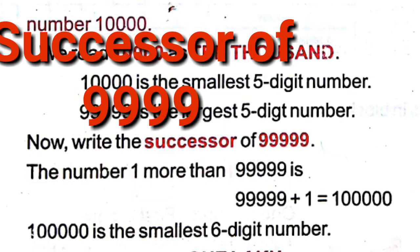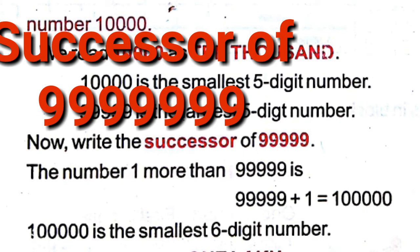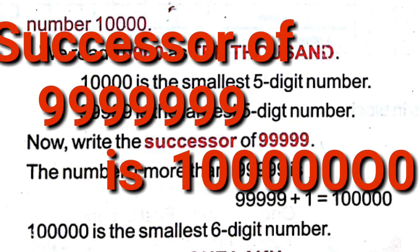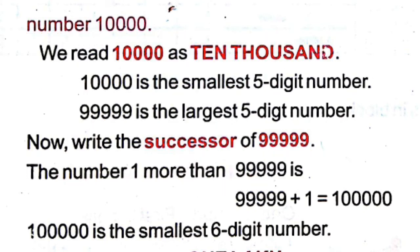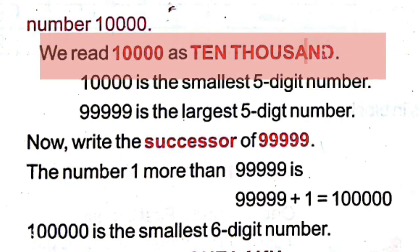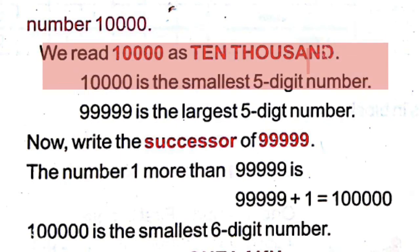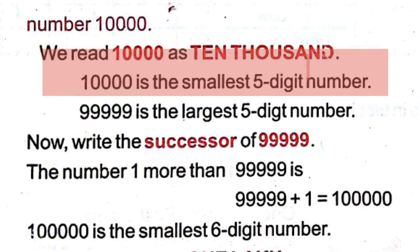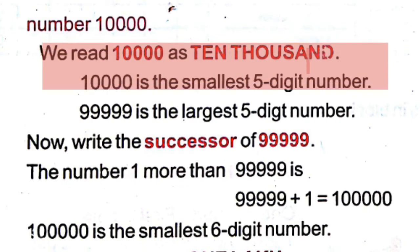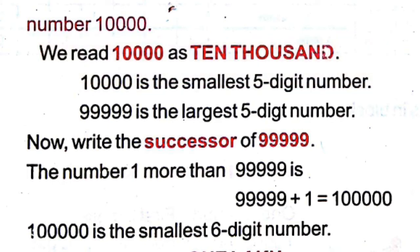The successor of the seven-digit largest number is the eight-digit smallest number. We read 1 followed by four zeros as 10,000. So 1 with four zeros is 10,000, which is the five-digit smallest number.